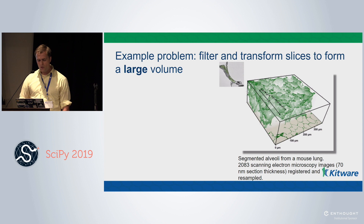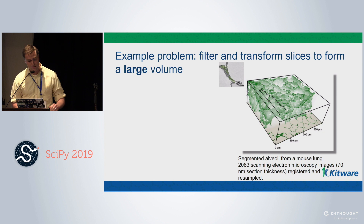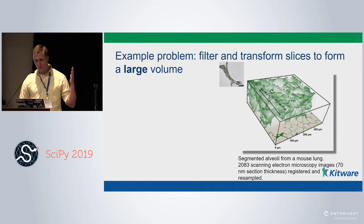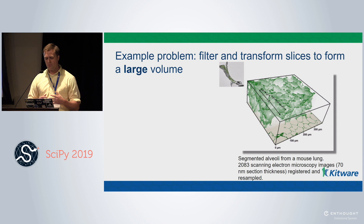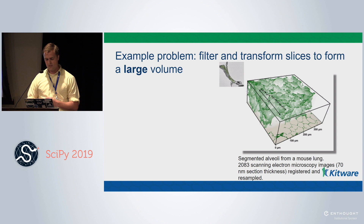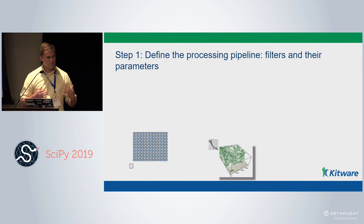We're going to take this design pattern and learn how to apply it to different datasets — also outside of ITK, the general principles. Our example problem is filtering and transforming slices to create a large volume. We have this dataset acquired as 2D slices, figure out transformations to align them, do some filtering to remove noise and prevent aliasing, then sample along a grid to produce a nice 3D volume.